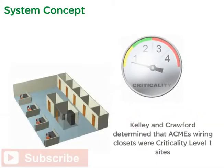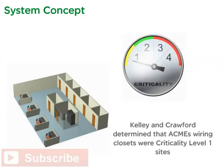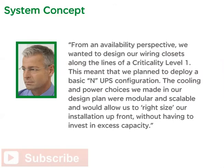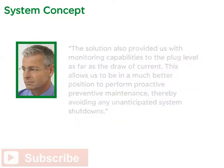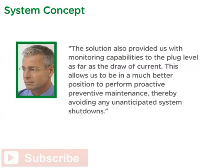Kelly and Crawford determined that Acme's wiring closets were criticality level one sites. From an availability perspective, they designed the wiring closets along the lines of criticality level one. This meant deploying a basic N-UPS configuration. The cooling and power choices made in the design plan were modular and scalable, allowing them to right-size the installation up front without investing in excess capacity. The solution also provided monitoring capabilities to the plug level, allowing proactive preventive maintenance and thereby avoiding unanticipated system shutdowns.